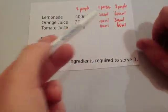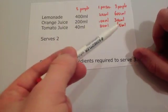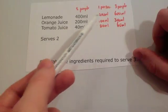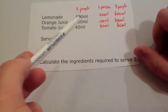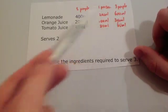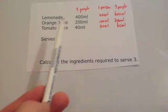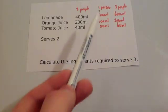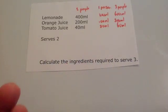So they would need 600 ml of lemonade, 300 ml of orange juice, and 60 ml of tomato juice. Notice if you just add the two people and the one person together, you actually get the same answer — that can be quite useful. But if you just take the ingredients and divide by how many it serves to get one person, and then times by how many you need, you'll always get the right amount.